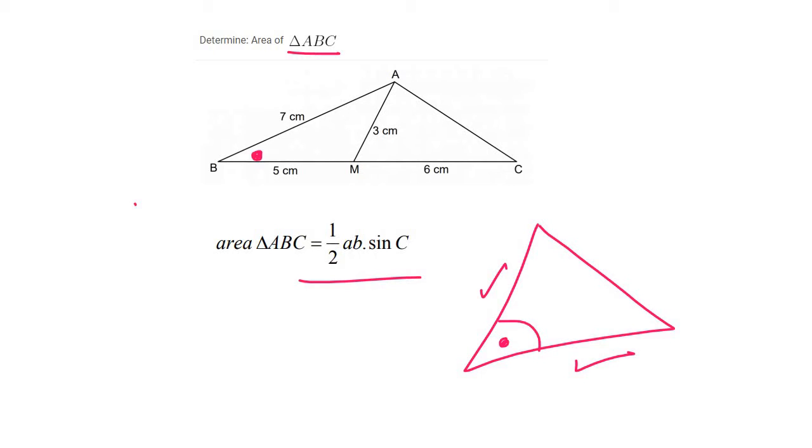Now we can't use the sin rule because you could say that those two are opposites, but then we don't have any other opposites in that little triangle. But what we could use is the cos rule in reverse.